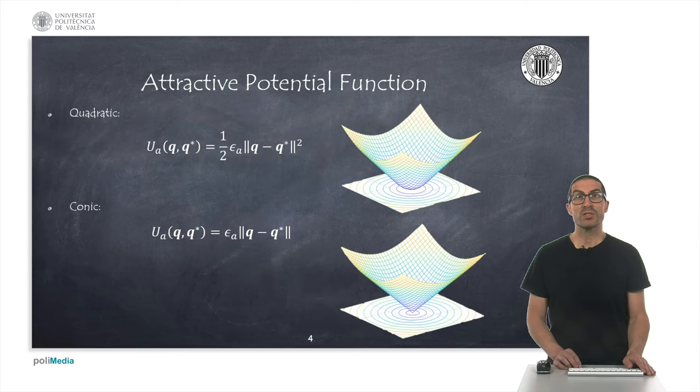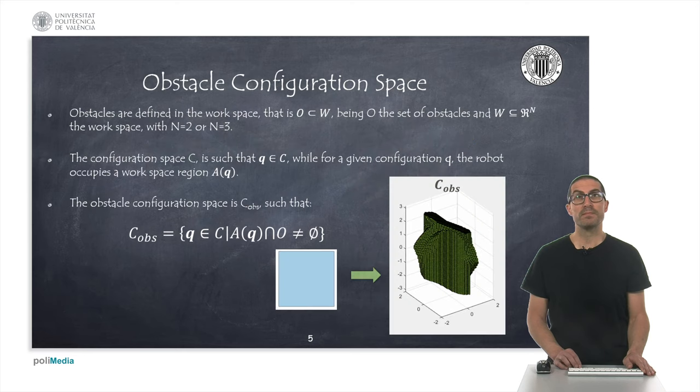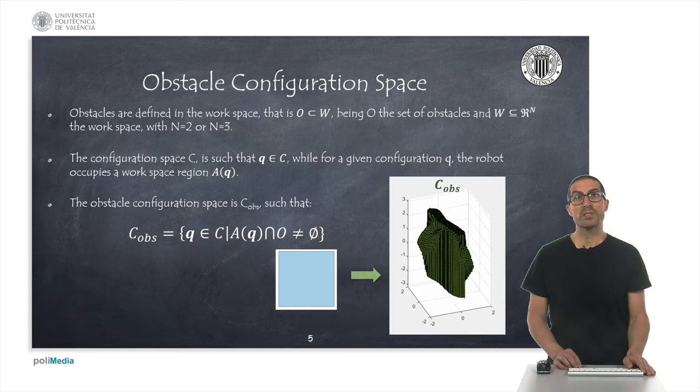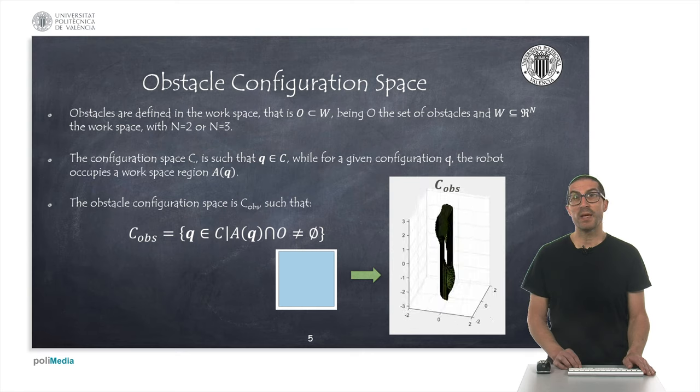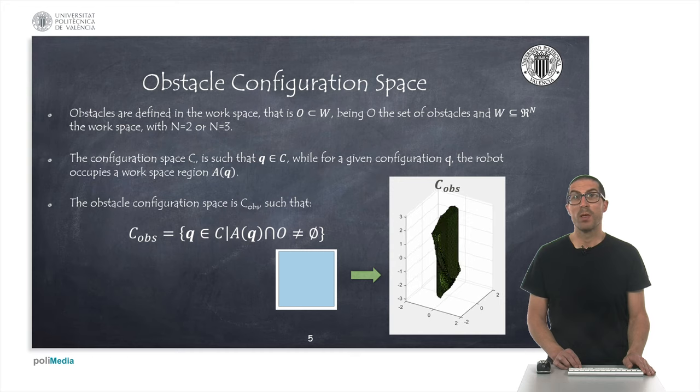The attractive potential function, as we saw in the previous video, could be a quadratic function or a kinetic function or even a combination of both. Usually, obstacles are defined in the workspace, since this is the space in which the robot works, which is usually a subspace of dimension 2 or 3 depending on the problem.